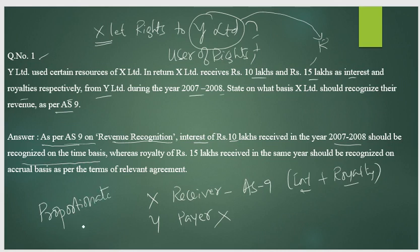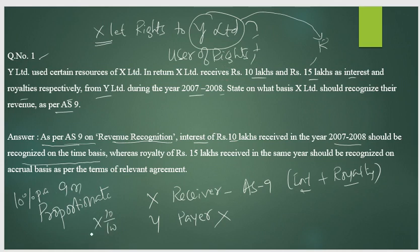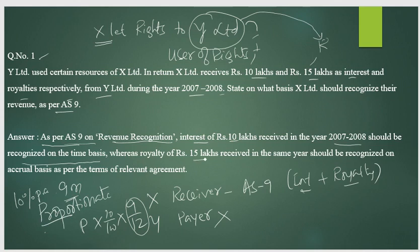Why is it called proportionate? For example, at 10 percent per annum for nine months only — the calculation is: Principal × 10/100 × 9/12. This 9/12 is called proportionate. So interest should be recognized on a time basis, meaning nine months proportionately.